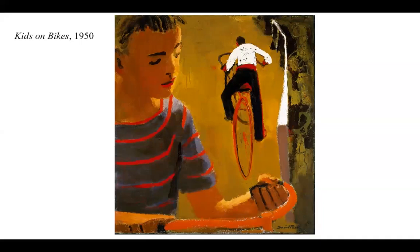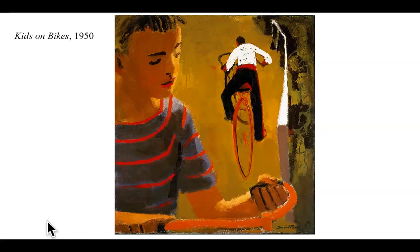Looking at 'Kids on Bikes' — what makes it figurative and what keeps an abstract sense? It's not a realistic depiction. The bicyclist seems to be hovering in the air. The relationship between him and the boy is unusual — almost like the bike is on the kid rather than the other way around. We'd love folks to share their thoughts in the chat or unmute. What elements do you find abstract? Notice the stripes on his shirt — how does that sit with you?